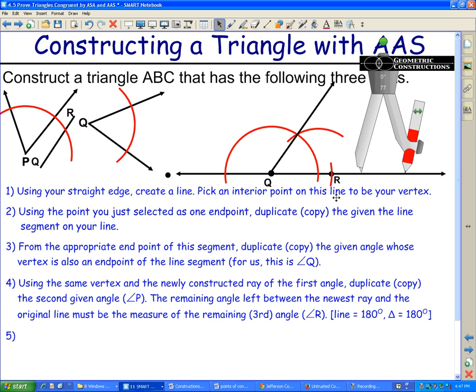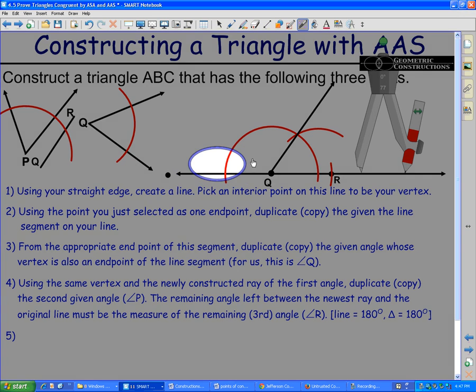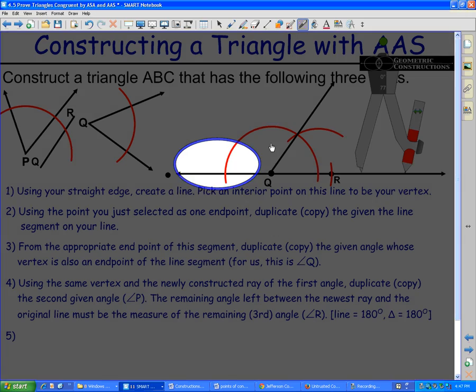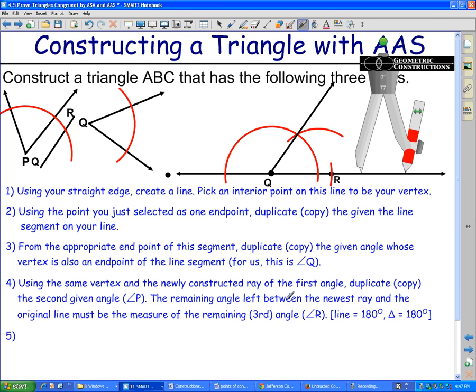The remaining angle between the newest ray and the original line, which is going to be the angle that we're going to find kind of over in this area here, that's going to be the missing angle R that we're looking for. How do we know that? Well, it's a mathematical argument. There's 180 degrees in a triangle. There's also 180 degrees along a straight line. So that's kind of how that works.